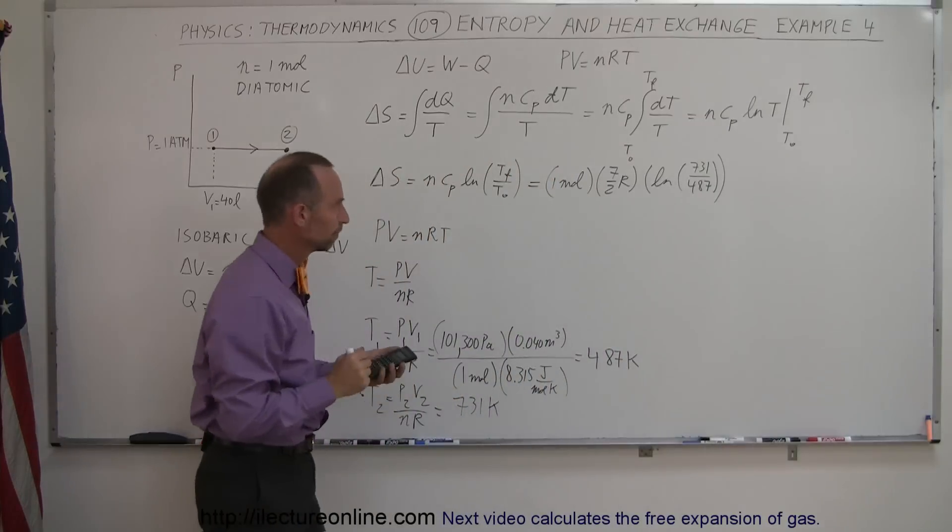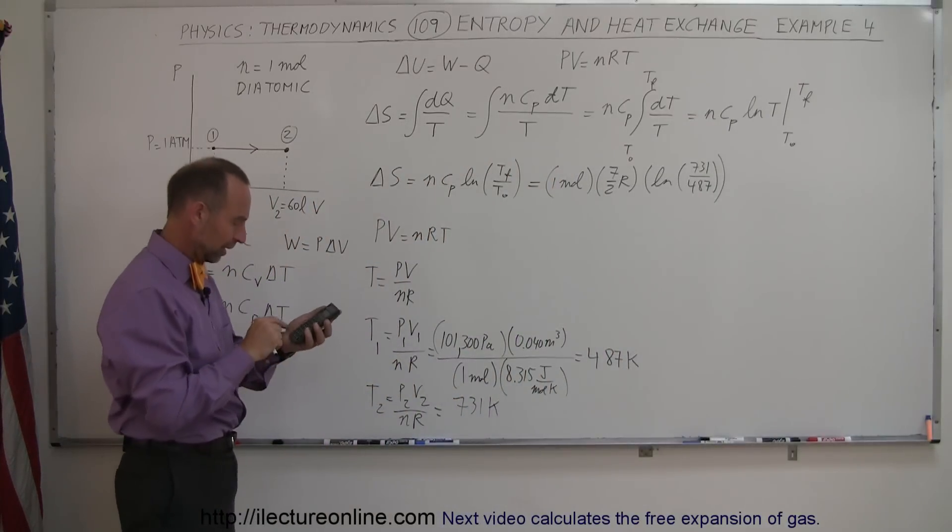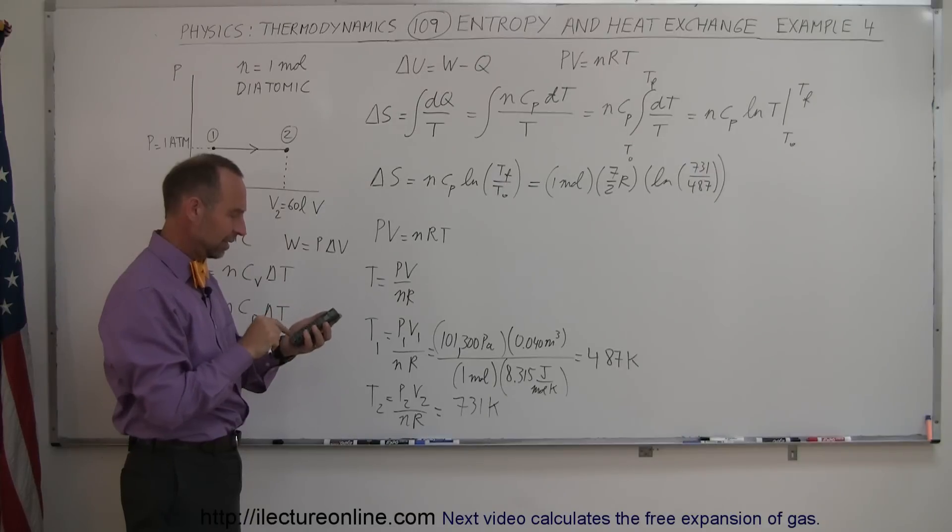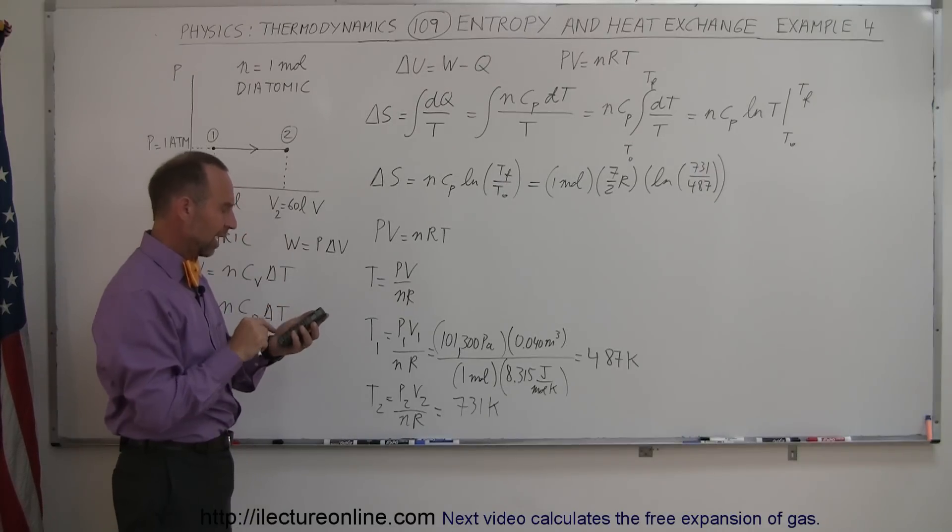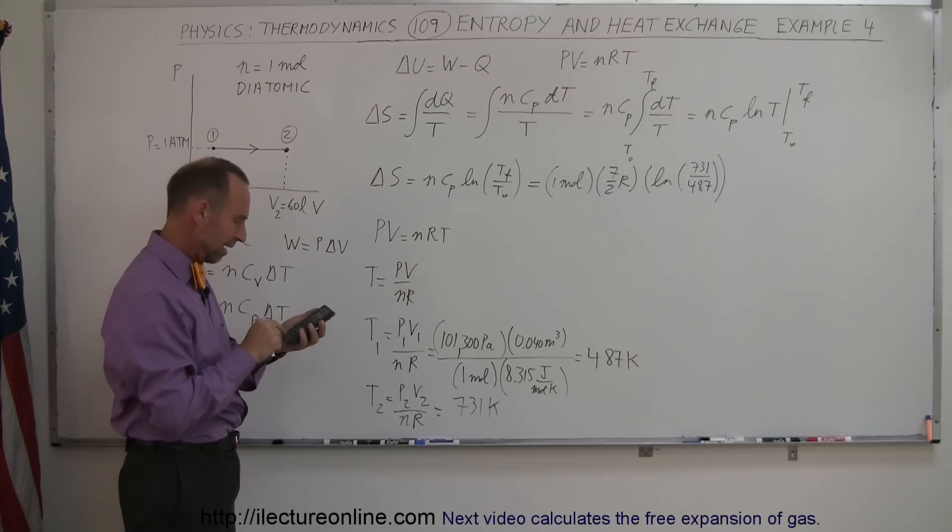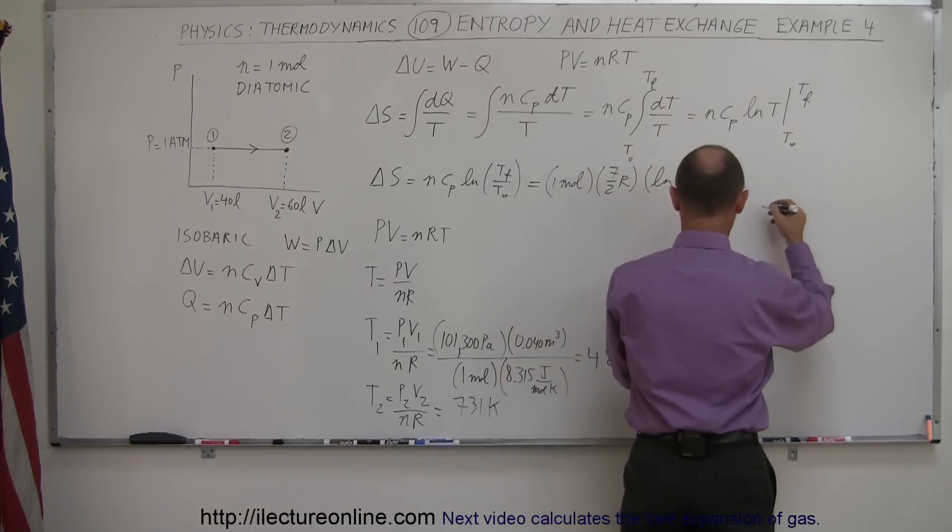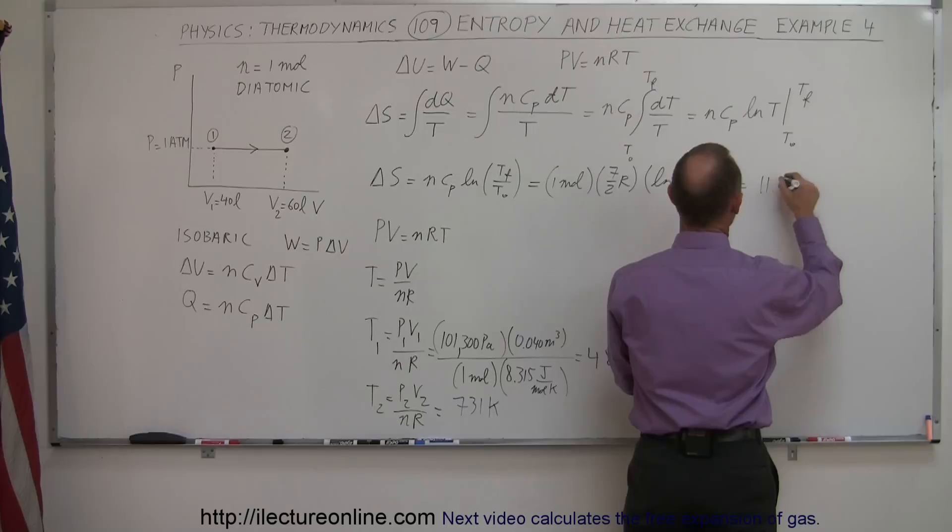Okay, go ahead and figure that out. 731 divided by 487, take the natural log of that, multiply that times 7 halves, which is 3 and a half, so multiply times 3.5, and multiply times R, which is 8.315 equals, and it looks like the delta S in this case is going to be equal to 11.8 joules per Kelvin.